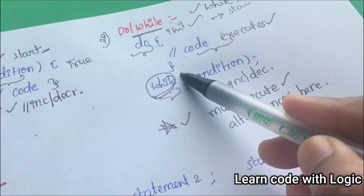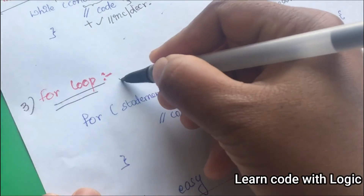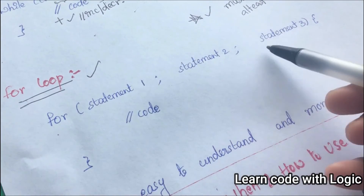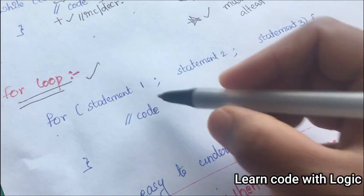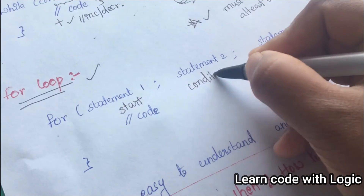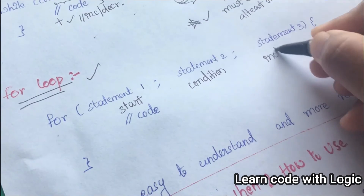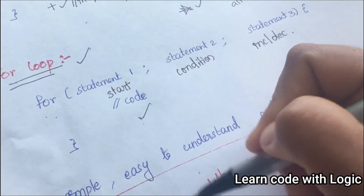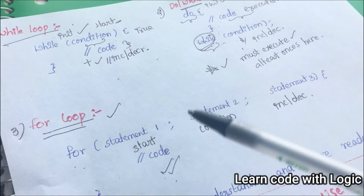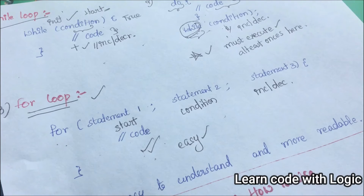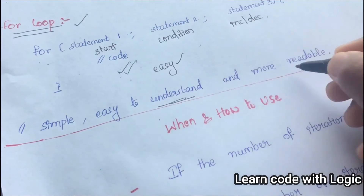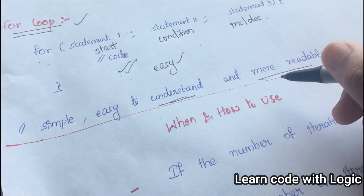That is the main difference between the while and do-while loop. Now the important one is the for loop. In the for loop, the syntax requires three parameters: the first is the starting point, the second is the condition, and the third is increment or decrement. If the condition is true, execution starts. After looking at these three syntaxes, we can say this is easy and simple, and even while writing the code you can observe how readable and fun it is.